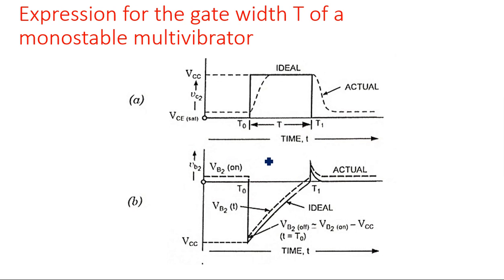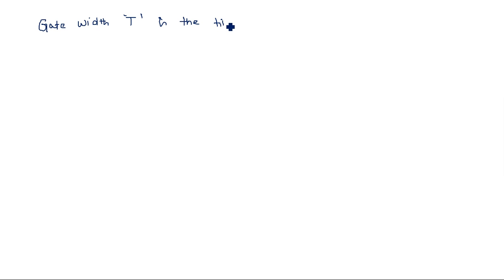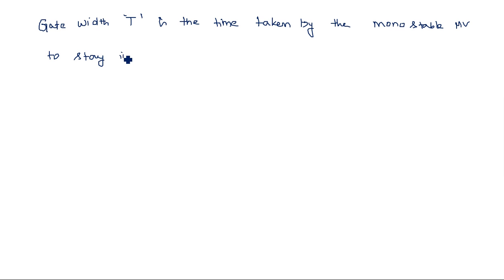That duration is what we are going to calculate — how much time the transistor is in the unstable state. That is called gate width. Gate width T is the time taken by the monostable multivibrator to stay in the quasi-stable state. So after the application of the negative triggering pulse, how much time does the transistor take to get back into the stable state?